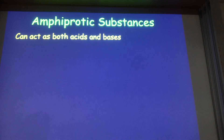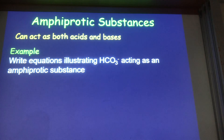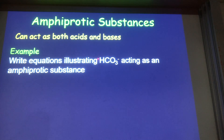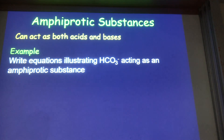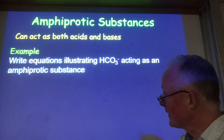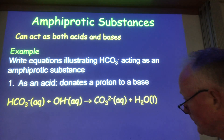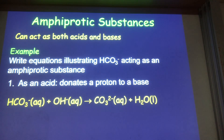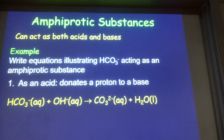Amphiprotic substances can act as both acids and bases. Many ions like hydrogen carbonate can be amphiprotic — it can gain a proton or lose a proton. To show it acting as an acid, you react it with a base. For example, HCO₃⁻ plus hydroxide gives carbonate plus water.